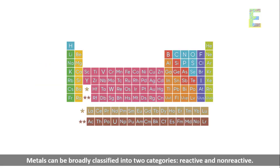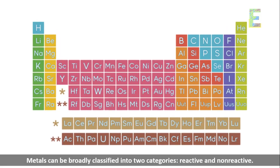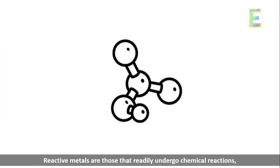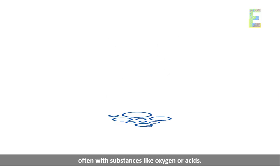Reactivity of metals. Metals can be broadly classified into two categories: reactive and non-reactive. Reactive metals are those that readily undergo chemical reactions, often with substances like oxygen or acids.